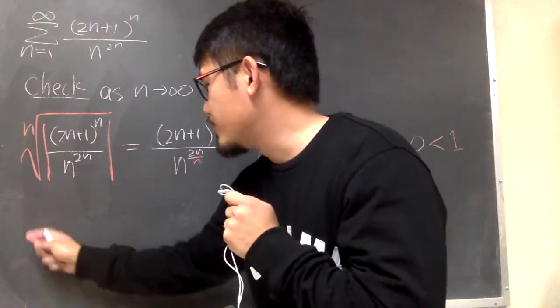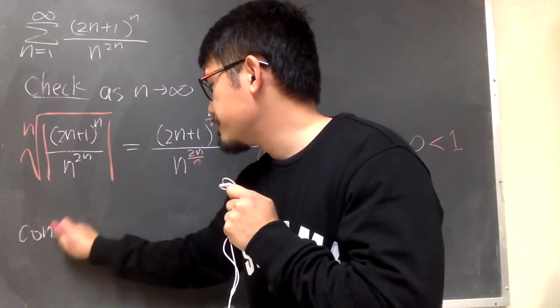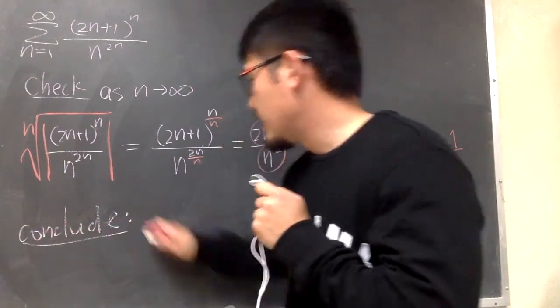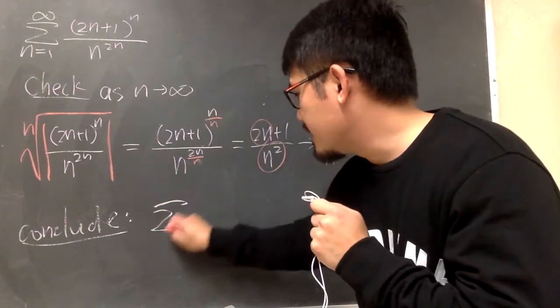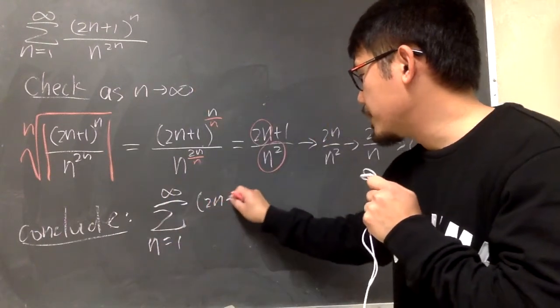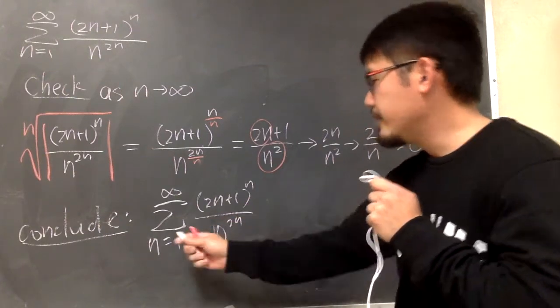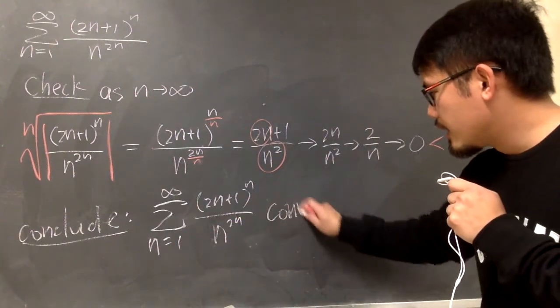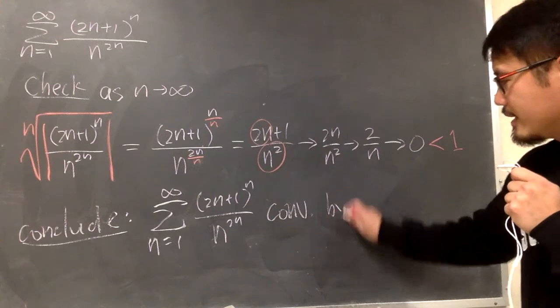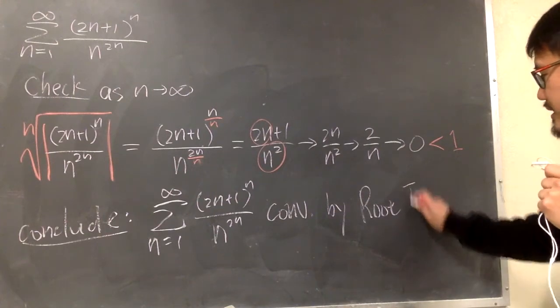So, at the end, I'm just going to write down the conclusion. The original, so I'll write it down again. Sigma when n goes from 1 to infinity, 2n plus 1 to the n's power over n to the 2n. This right here converges by the root test. That's it.